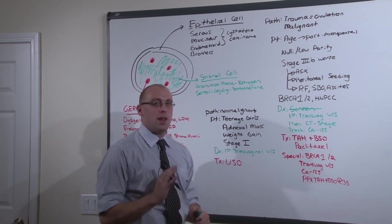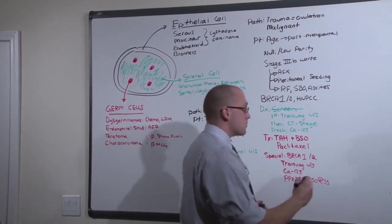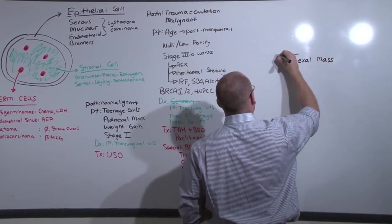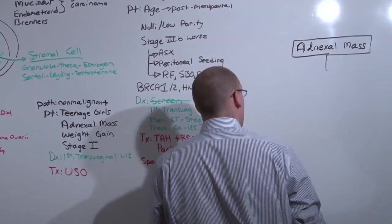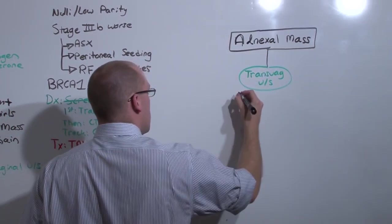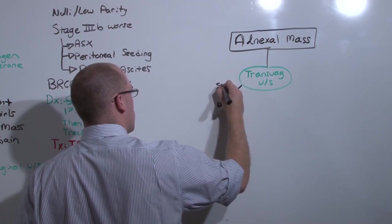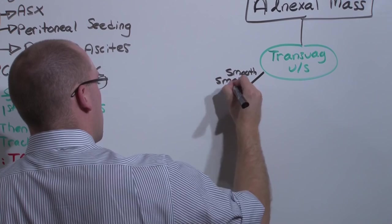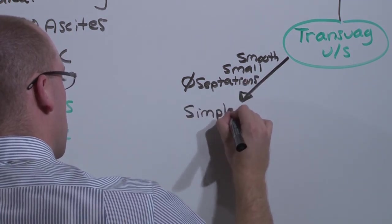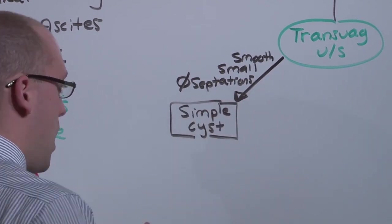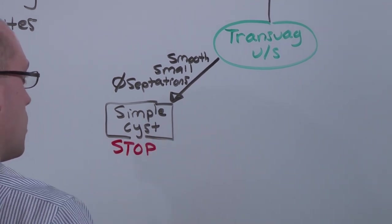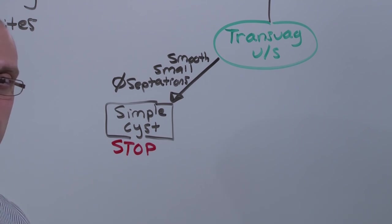So let's briefly talk about how you handle an adnexal mass and the diagnosis of ovarian cancer. The patient comes in complaining of an adnexal mass or you find one on an annual exam. The transvaginal ultrasound is the way to start. If you see a smooth, small cyst without septations, you have a simple cyst. A simple cyst is physiologic. If you have a simple cyst, you can simply stop. No additional investigation needs to be made because it's probably not a cancer.